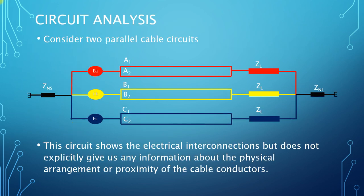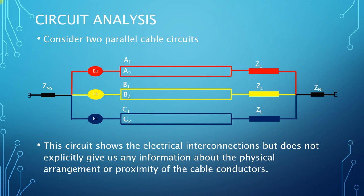If we consider the electrical characteristics where we have two parallel cable circuits supplying a load, then the electrical connectivity would look like the diagram shown in this slide. Here we have the two parallel cable circuits: phase A, then the B phases, and then the C phases. The cables are connected in parallel, as we would expect, and they supply a load impedance in each phase.